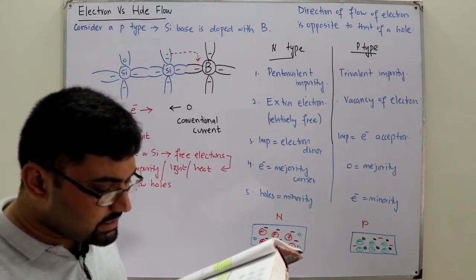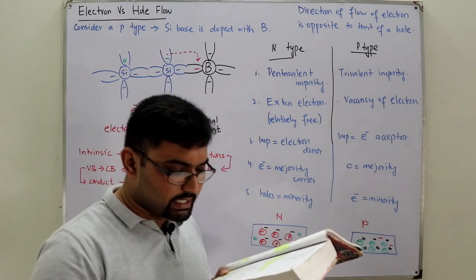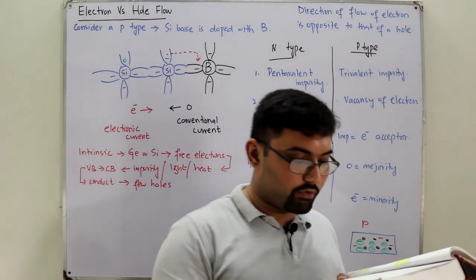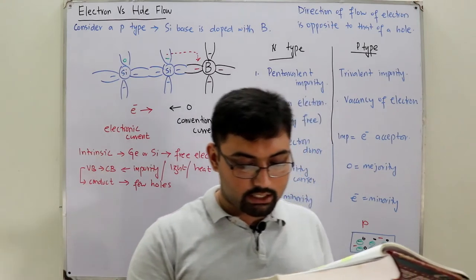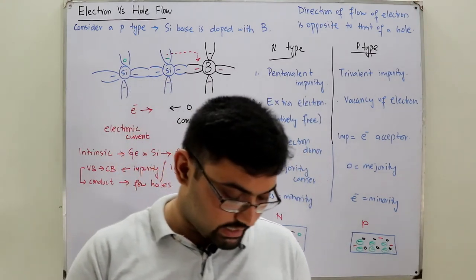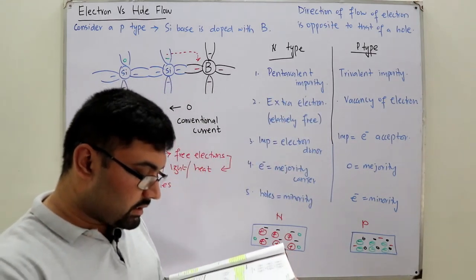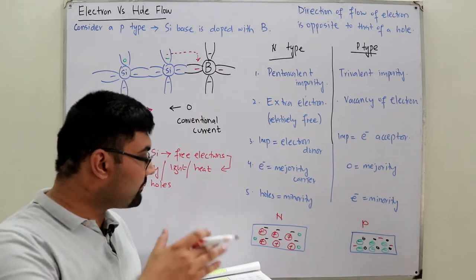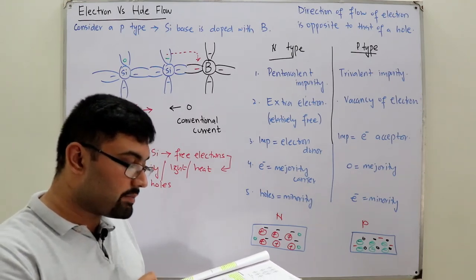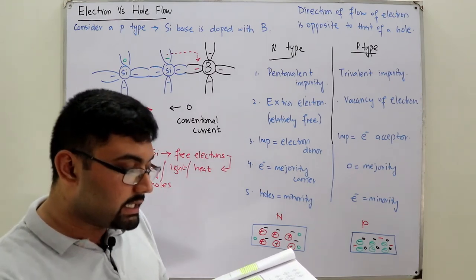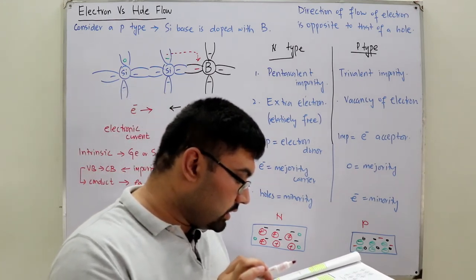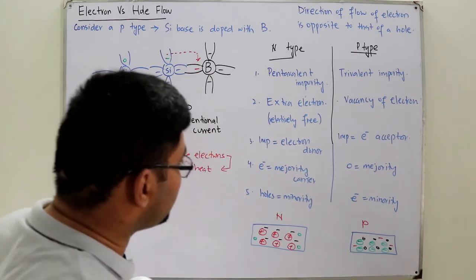The vacancies left behind in the covalent bonding structure represent a very limited supply of holes in n-type material. The number of holes has not changed significantly from the intrinsic level, but the number of electrons far outweighs the number of holes. For this reason, in n-type material the electron is called the majority carrier and the hole is called the minority carrier.